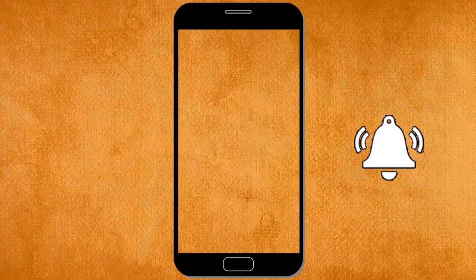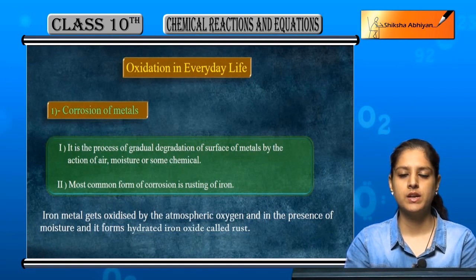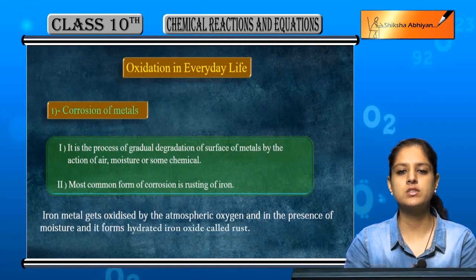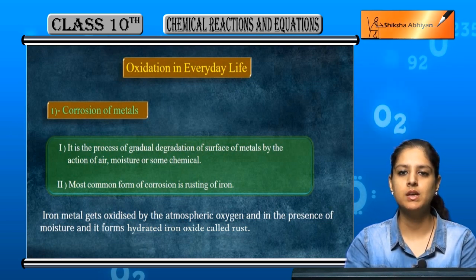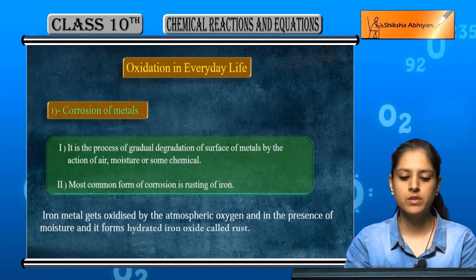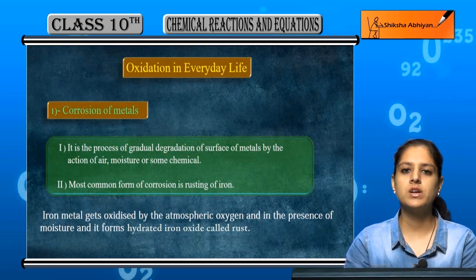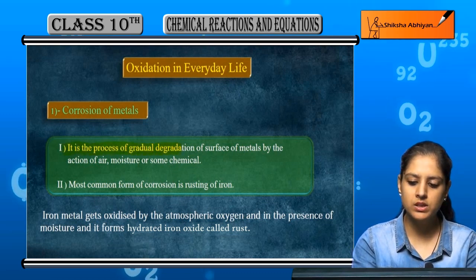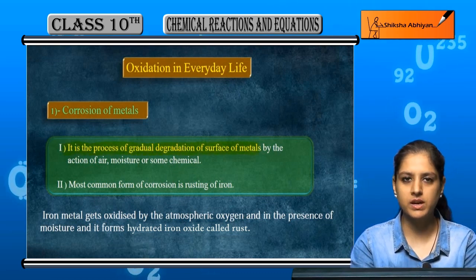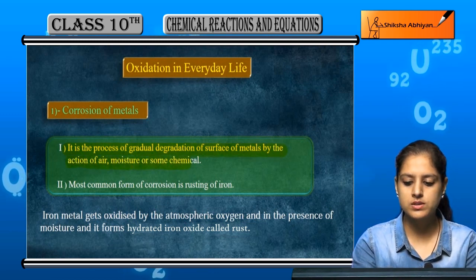Now the last topic is oxidation in everyday life — everyday life mein kaisi oxidation hoti hai, kin kin cheezon pe hoti hai, yem is topic pe dekhenge. We will study two phenomena. First is corrosion of metals. Now what is corrosion? It is the process of gradual degradation of the surface of metals by the action of air, moisture, or some chemical.